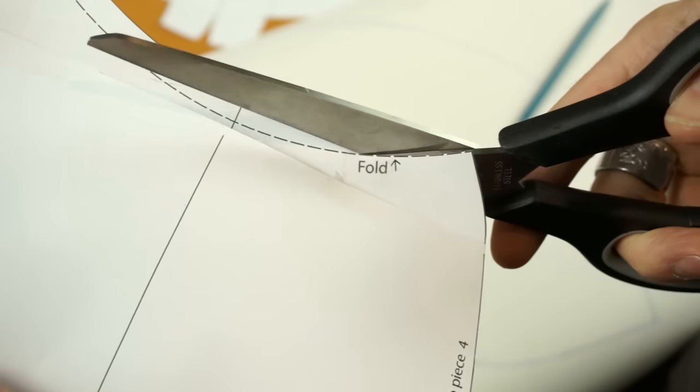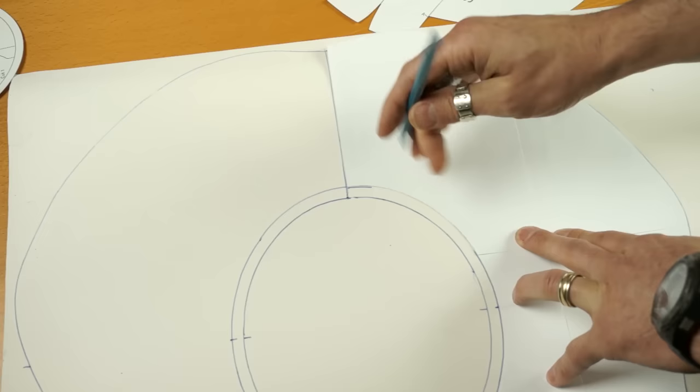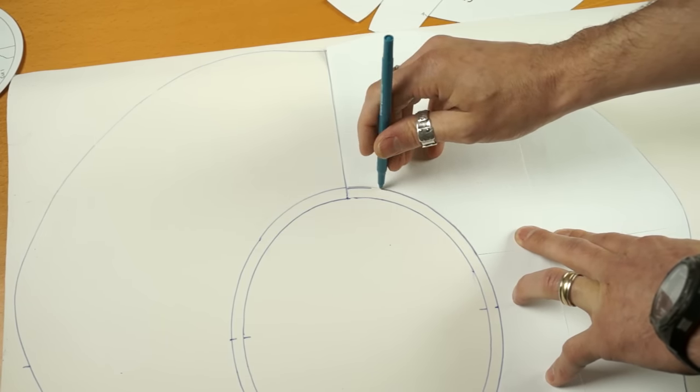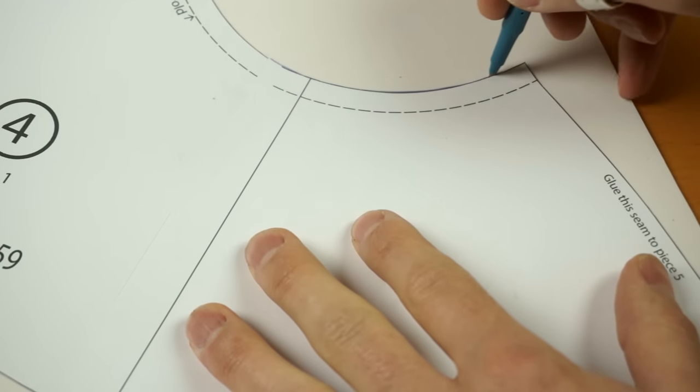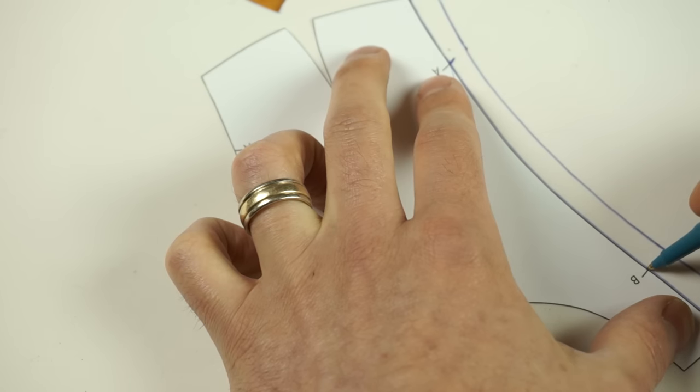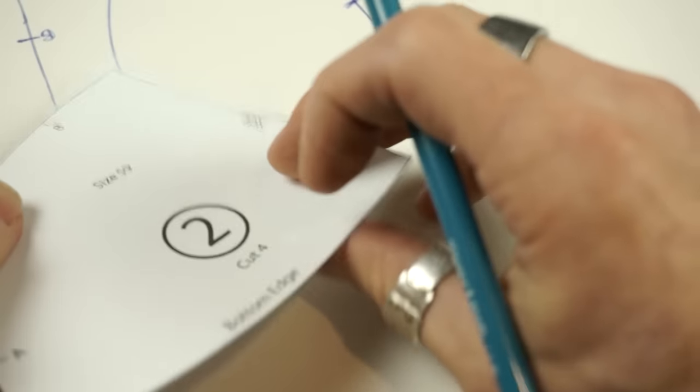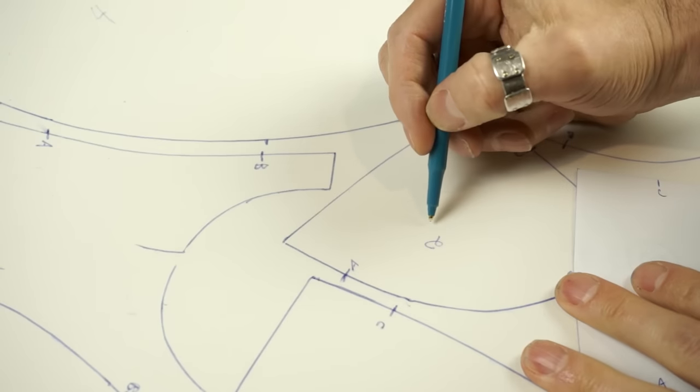Pick up the same piece number five again and cut along the dotted fold line. Replace the pattern piece back to where it was and draw the fold line onto the foam. Now trace piece number four, doing the same thing with the fold line. Trace two of piece one, one of piece three, and four of piece two.